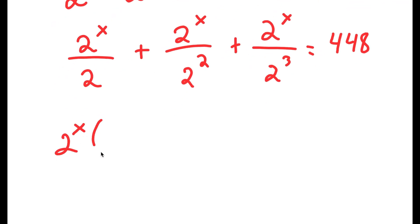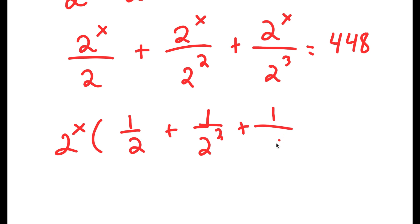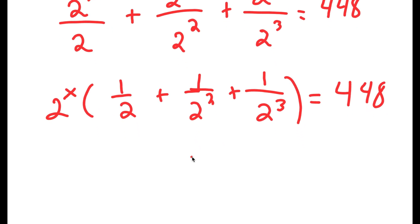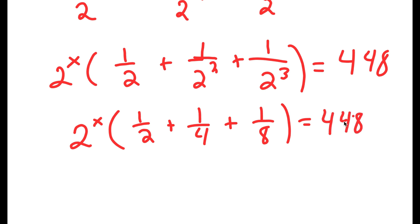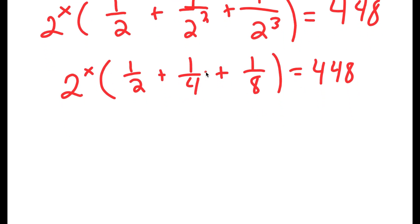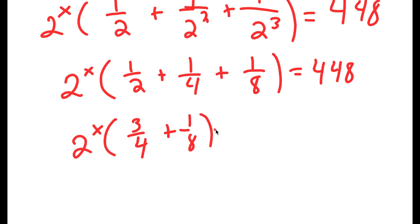Now if I factor out 2 to the power of x, I get 2 to the power of x times the quantity 1 over 2 plus 1 over 2 squared plus 1 over 2 to the power of 3, which equals 448. This simplifies to 1 half plus 1 over 4 plus 1 over 8. Now 1 half plus 1 fourth is 6 over 8, which equals 3 over 4, and 3 over 4 plus 1 eighth equals 7 over 8.